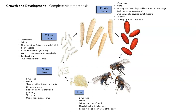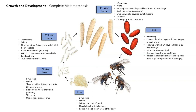Once the third instar larvae are done developing, they're going to pupate — they form pupae. They are 9 millimeters long in this stage, cream colored to begin with, but change to very dark brown through the end of the pupae stage. They show up within 8 to 24 days and last roughly 6 to 12 days in this stage. They are immobile — they do not feed, they do not move, they are basically cocooned — and they change to dark brown with age.